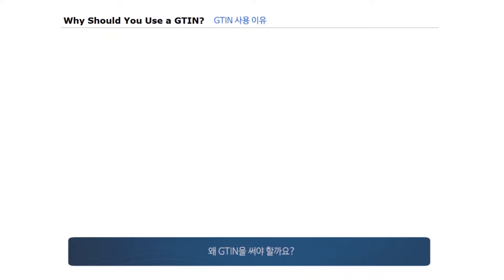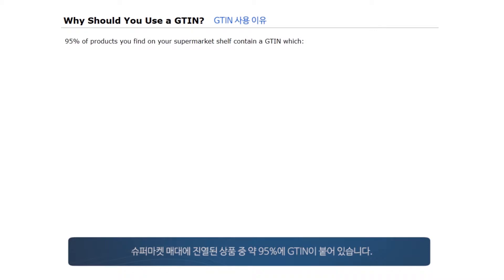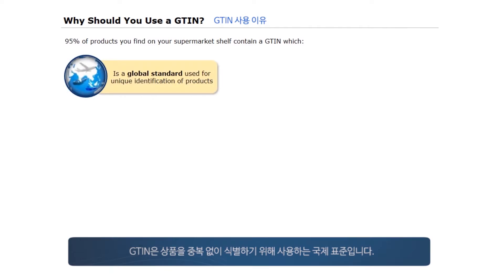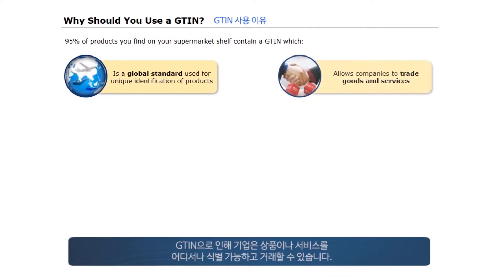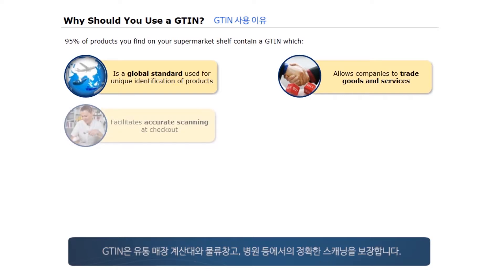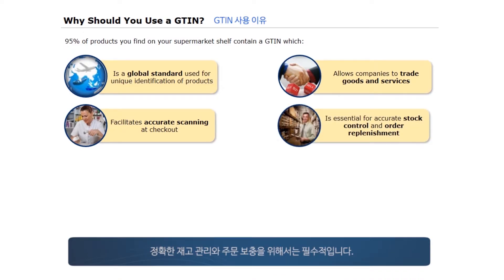Why should you use a GTIN? 95% of products you find on your supermarket shelf contain a GTIN. It is a global standard used for unique identification of products. It allows companies to trade goods and services knowing that the identification will be compatible. It facilitates accurate scanning at checkout, for example at retail outlets, warehouses or hospitals. It is essential for accurate stock control and order replenishment.